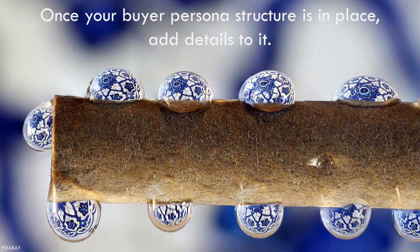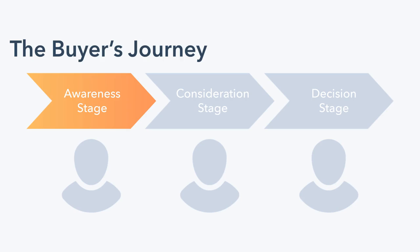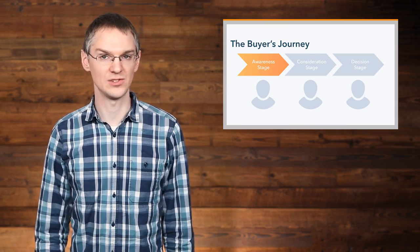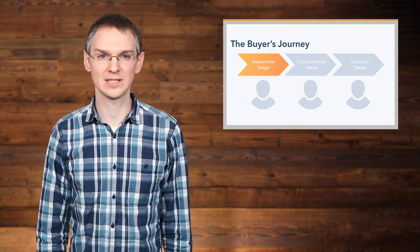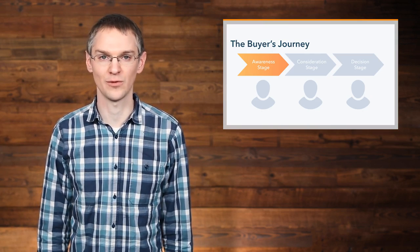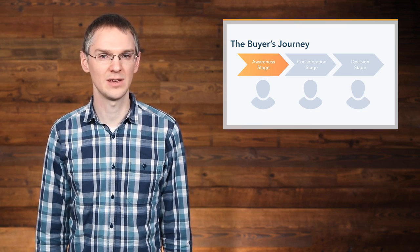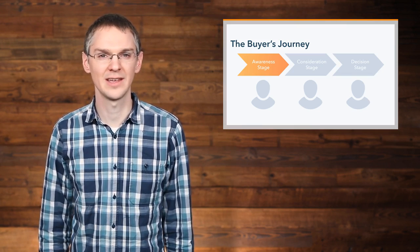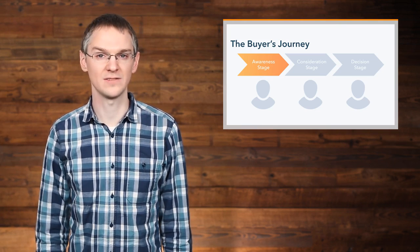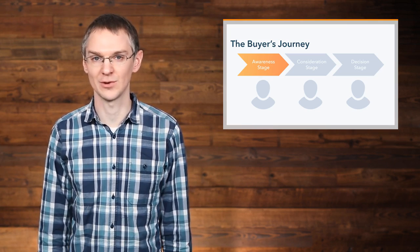Once your buyer persona structure is in place, add details to it. Focus on the perspective people have in the awareness stage of the buyer's journey, meaning they're still trying to diagnose the problem they have. As you do this, be sure to emphasize the perspective of the persona relative to the other people within your ideal customer profile. What makes their perspective unique? Why are they the person you're focusing on rather than somebody else? How are you uniquely positioned to help them with the problem they're facing? All of this information should be included in your buyer persona.